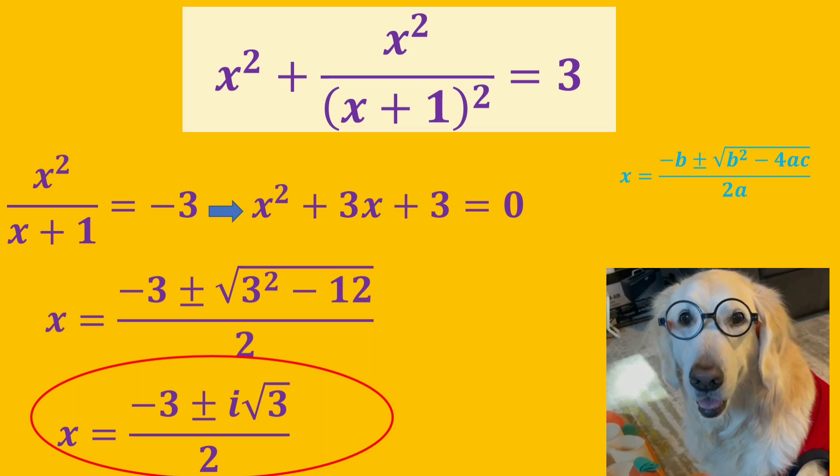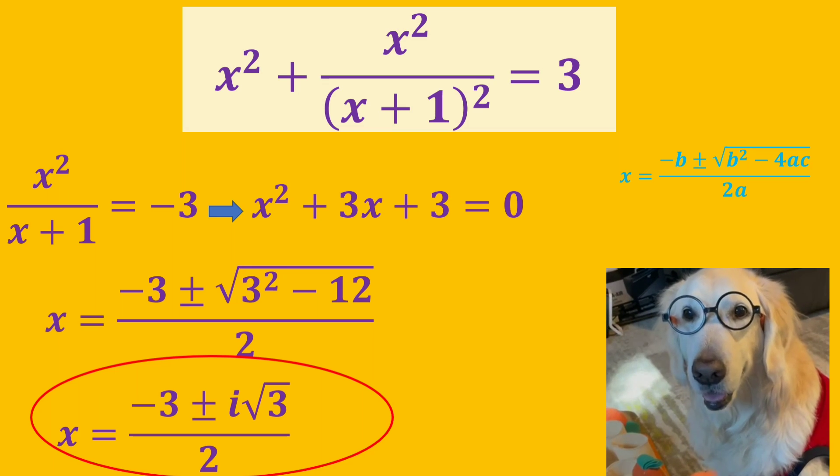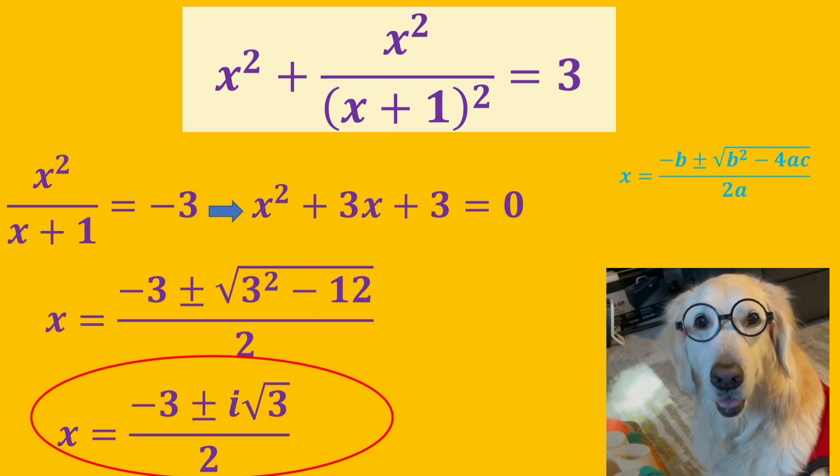We use the quadratic formula for the second equation to find the other values of x. And the x values here are minus 3 plus or minus i times square root of 3 all over 2.